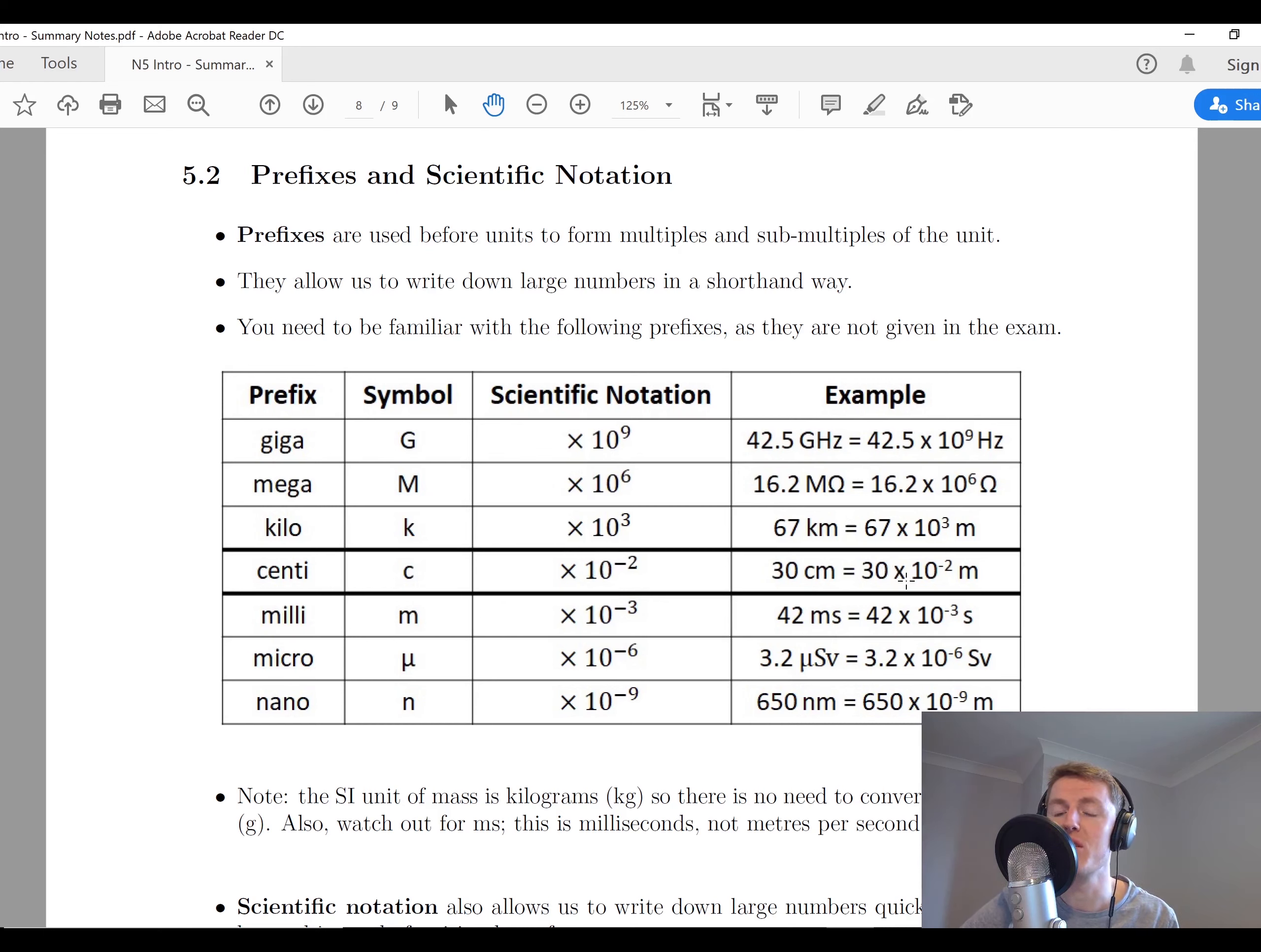Centi means times 10 to the power of minus 2. For example, 30 centimeters is 30 times 10 to the minus 2 meters, or 0.3 meters. Other examples: if we go up the way, we'll see that the powers of, we've got a power of three patterns. So we've got 10 to the 3, 10 to the 6, 10 to the 9.